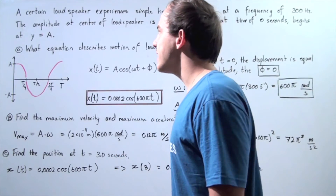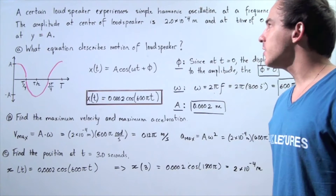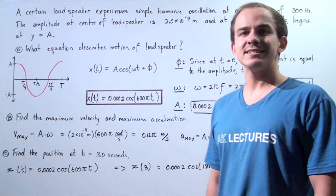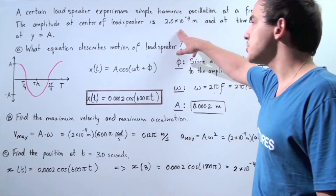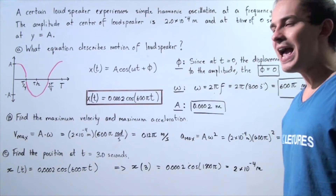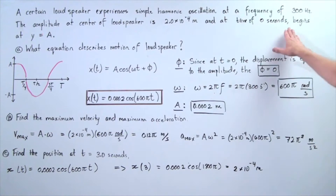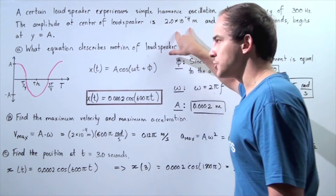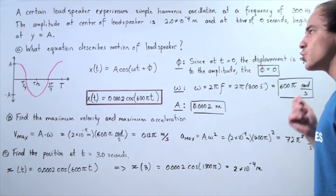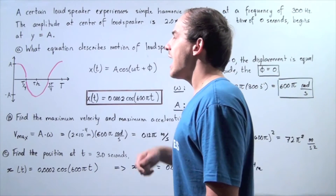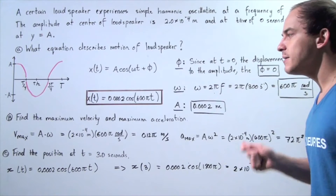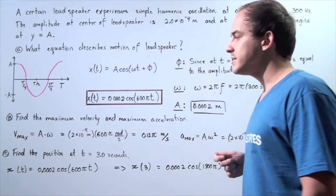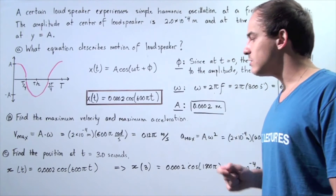Let's suppose we have the following example. A certain loudspeaker experiences simple harmonic oscillation at a frequency of 300 hertz. The amplitude at the center of the loudspeaker is 2 times 10 to the negative 4 meters. At initial time t equals 0 seconds, the oscillations begin at y equals A, where A is the amplitude. In part A, what equation describes the motion of the object as it oscillates? In part B, find the maximum velocity and maximum acceleration. In part C, find the position of the object at time equals 3 seconds.